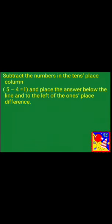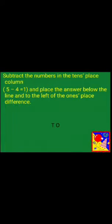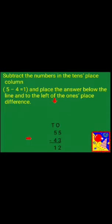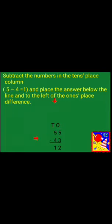Now, subtract the numbers in the tens place column and place that answer below the line and to the left of the ones place difference. Here, tens and ones place: 55 and 43. At tens place, we have 5 and 4. When we subtract 4 from 5, we get answer 1. And we will write this answer 1 at the place below the line and to the left of the ones place difference.